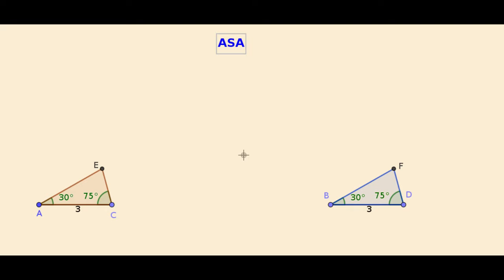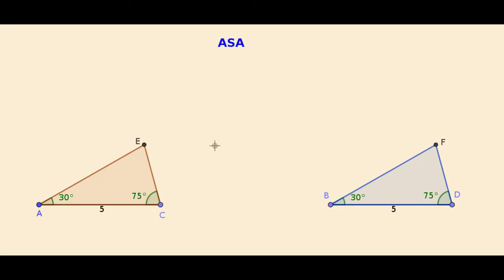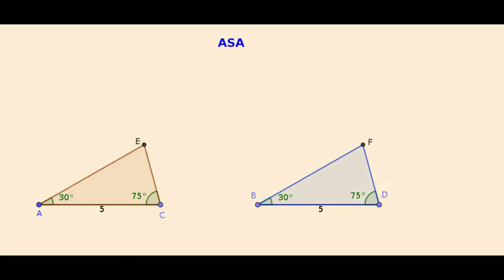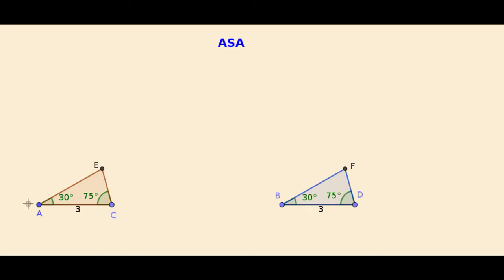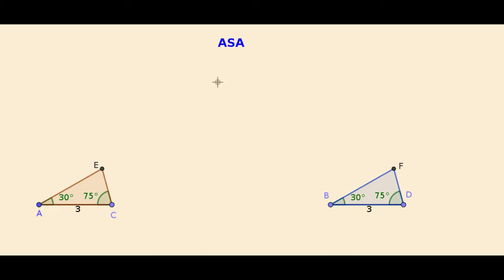Now, let us consider two triangles with two angles and the included side equal to the corresponding two angles and included side of another triangle. Then those two triangles are congruent. Even if I change the side, the two angles and the included side remain equal to the corresponding two angles and included side, and both triangles are congruent. This postulate is known as the ASA postulate.